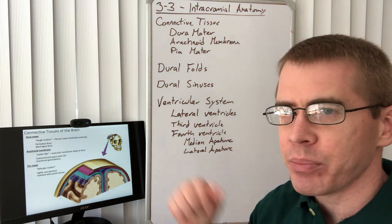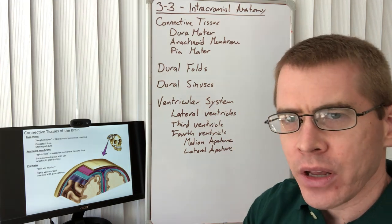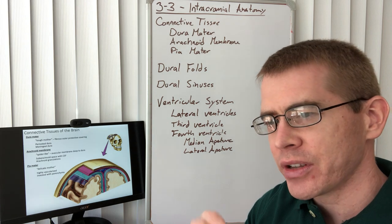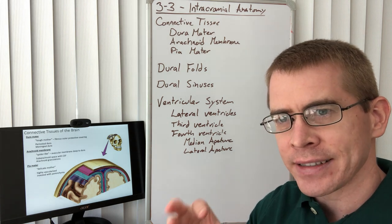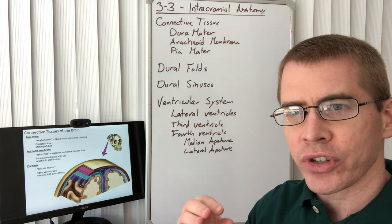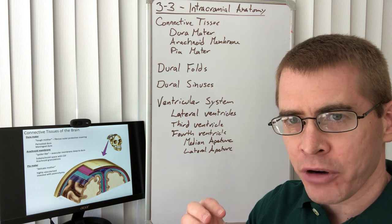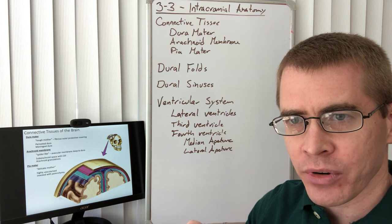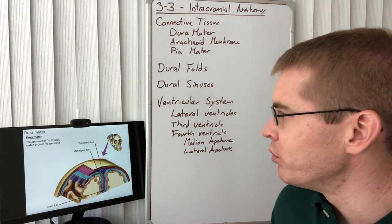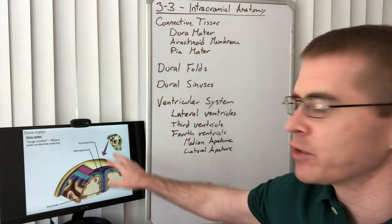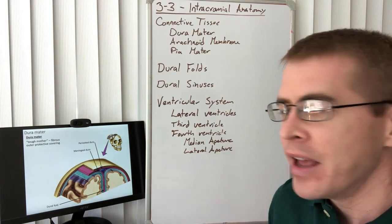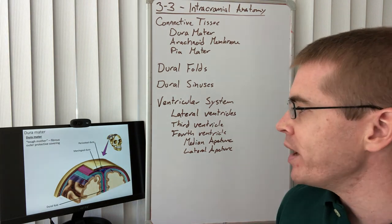Next we have the pia mater. The pia mater is so named because it is very thin and very delicate, and it is adherent to the surface of the parenchyma — the functional elements of the brain. We'll move through the next few slides and see these highlighted in different ways.